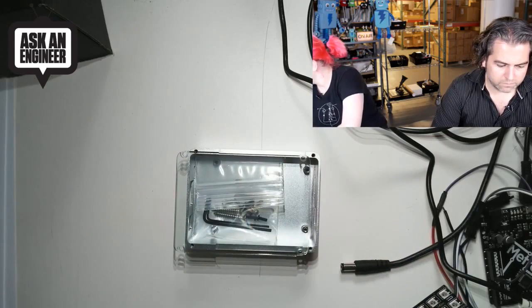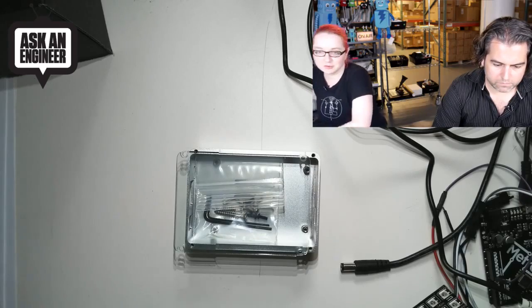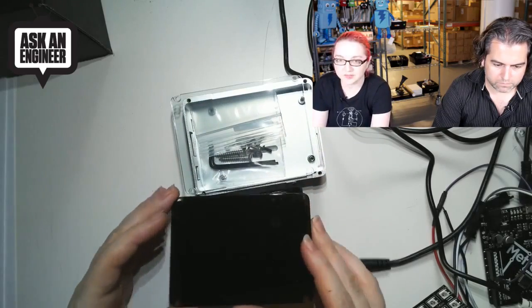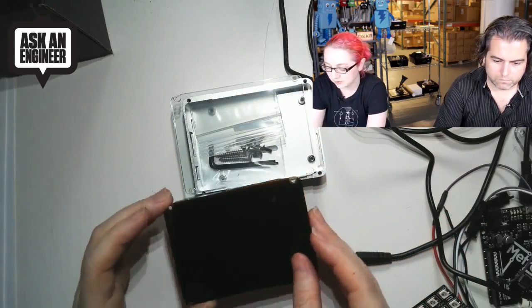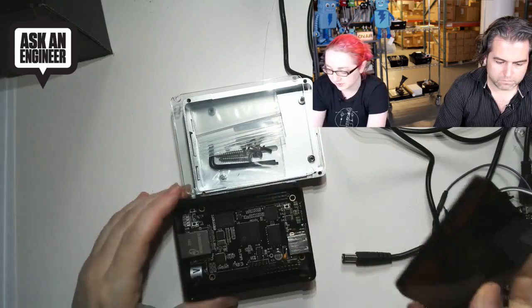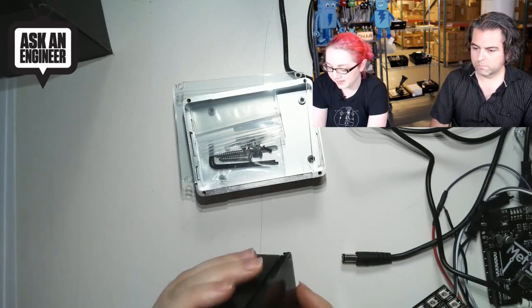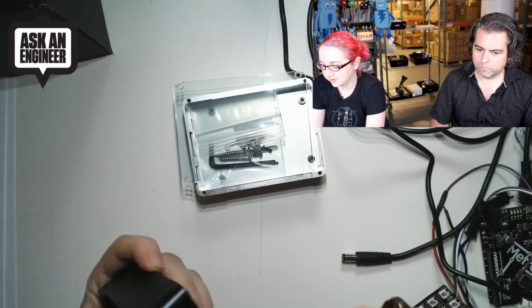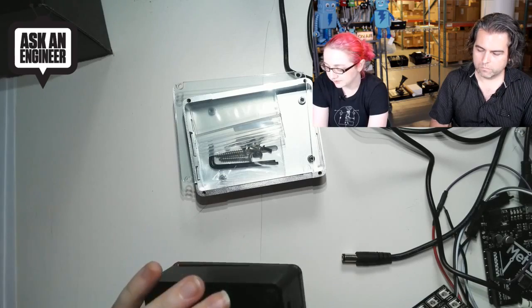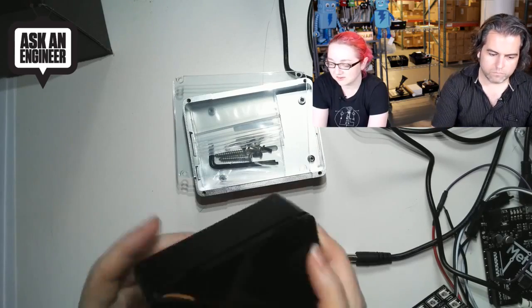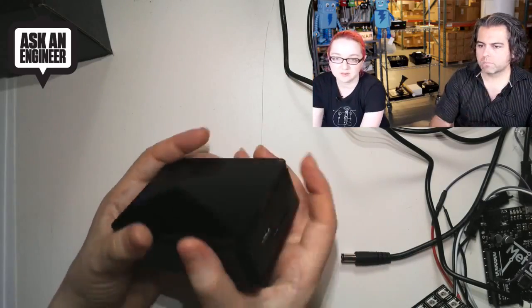We also have a version which is the dark version, which is black with a smoke case top. It's not completely transparent or opaque. It's kind of this translucent smoke color. You can see the BeagleBone fits very nicely into it. It's good for BeagleBone Blacks because it has all the slots you need, like the HDMI and stuff. They're just really lovely cases.